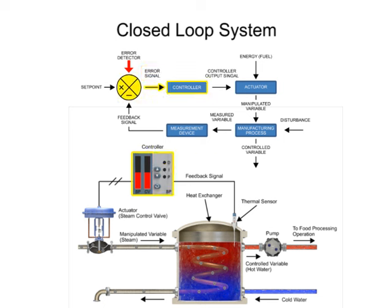The controller is the brain of the system. It receives an error signal as its input and provides an output signal to the final control element, or actuator. A signal from the controller causes the controlled variable to match the set point using the actuator of the system.